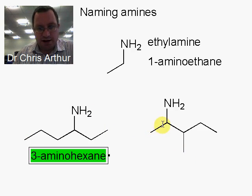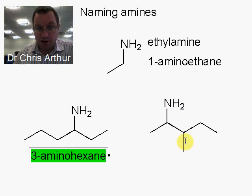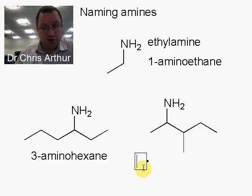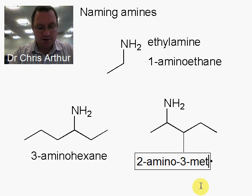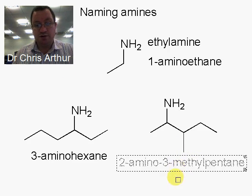Here we have a carbon chain with five carbons in its longest chain. We have an amine on carbon two, and we have a methyl group on carbon three. Remember that we order the substituents of a chain alphabetically. So we have 2-amino, 3-methyl, and it's got five carbons in the chain, so it's pentane — giving us 2-amino-3-methylpentane.